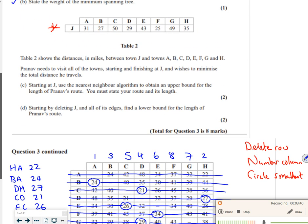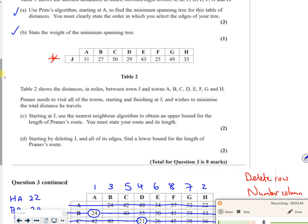Right, so then it says Table 2 shows the distances in miles from J, so all the different towns. We need to visit all the towns starting and finishing at J using nearest neighbor. So all right, let's have a look. So where's the closest for J to start with? So the closest for J to start with will be 25 moving to J to F.